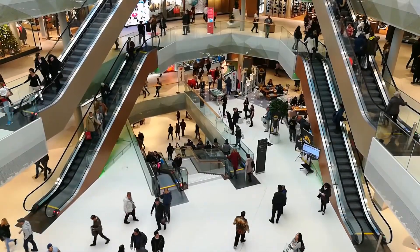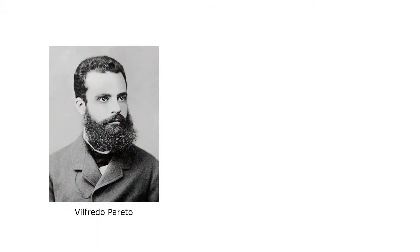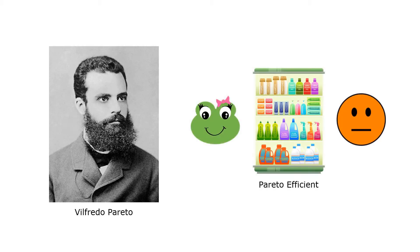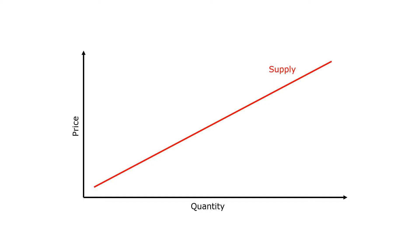The optimal allocation of resources is what economists call a Pareto optimum, after the Italian economist Vilfredo Pareto, or simply Pareto efficiency. If we have Pareto efficiency, that means that if we were to reallocate the resources to a different mix of products, at least one person would be made worse off by that reallocation, even if others were made better off. An efficient allocation is achieved when the supply of goods and services matches the demand for these goods and services, meaning the economy is producing the things that people want, as expressed by their ability to pay.